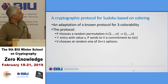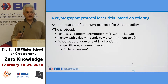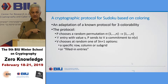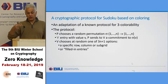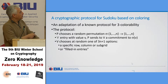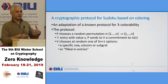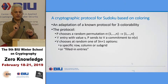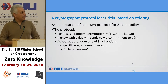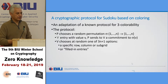Then V chooses at random one of 3N+1 options. The verifier can choose either a row, a column, or a subgrid — those are 3N options — and ask the prover to open those commitments. Or the verifier can choose to open all the pre-filled entries — all entries where numbers were already shown on the puzzle. Whatever the verifier chooses, the prover has to open.